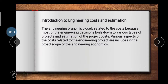First, the introduction regarding cost. Cost means, in simple terms, all expenses which occur through the production process are called cost. For example, electricity charges, machinery cost, and water supply requirements in some factories — all these types of expenses are considered as cost. The engineering branch is closely related to cost because most engineering decisions boil down to various types of projects, and estimation of project cost is important.